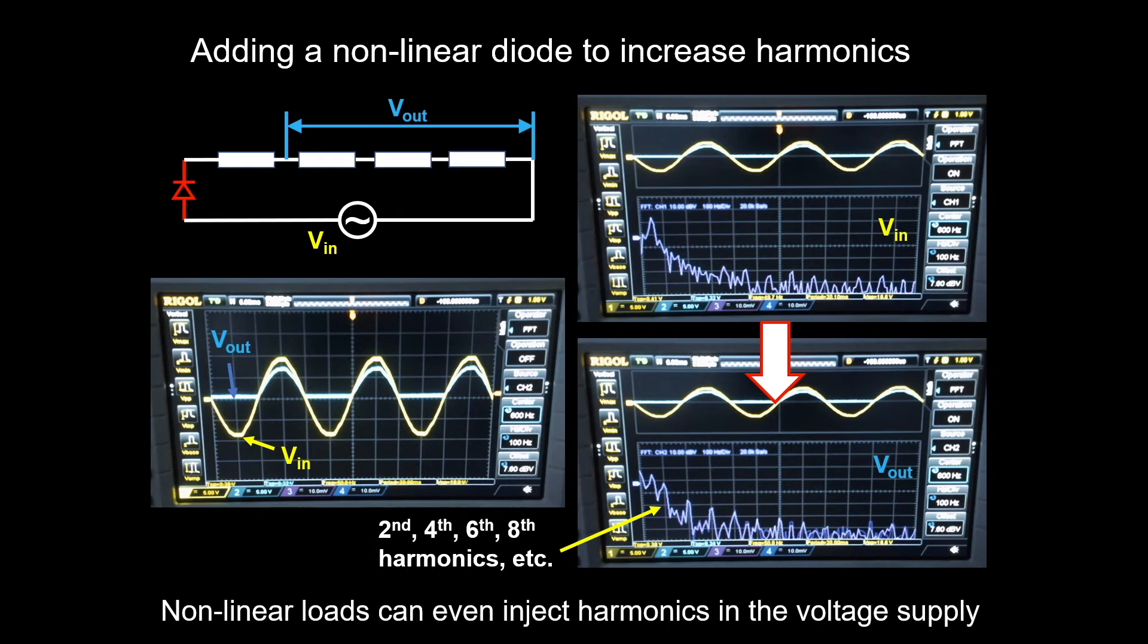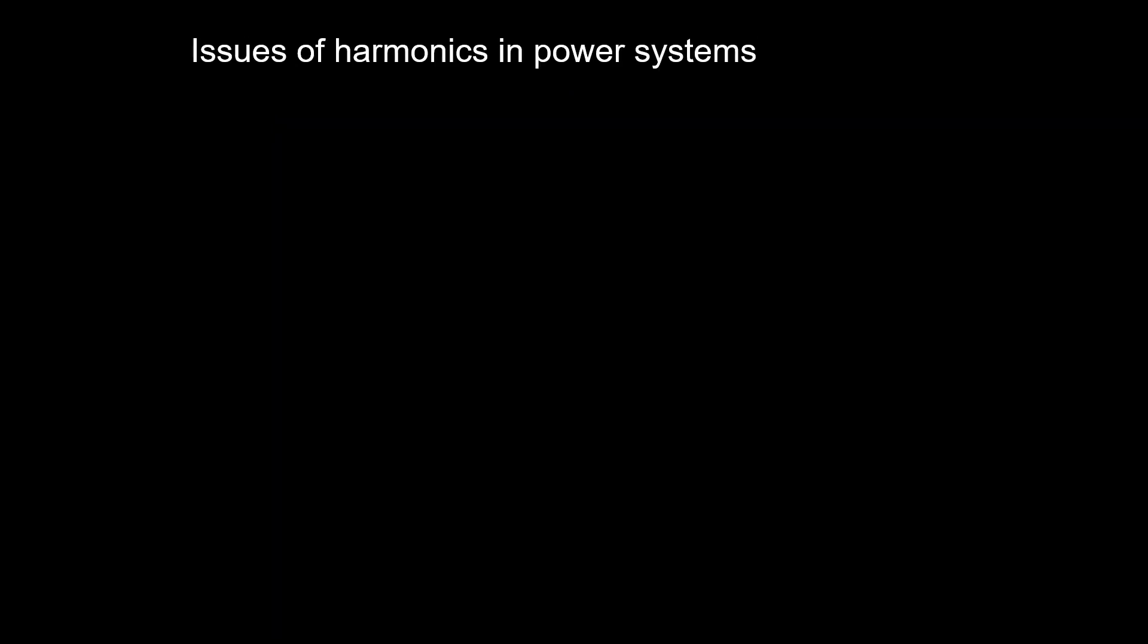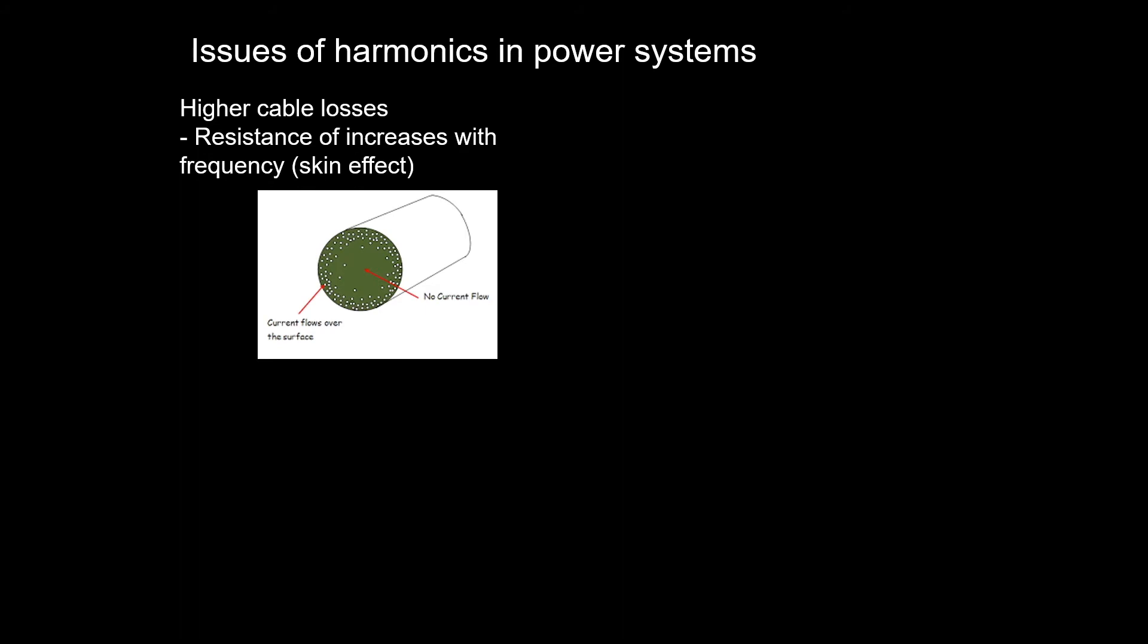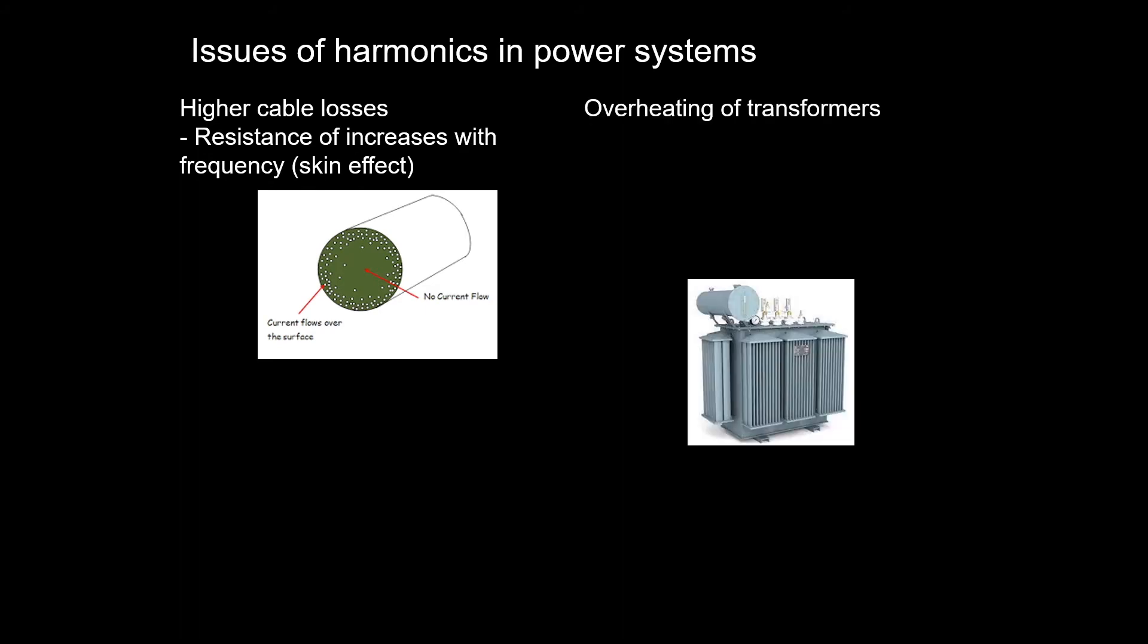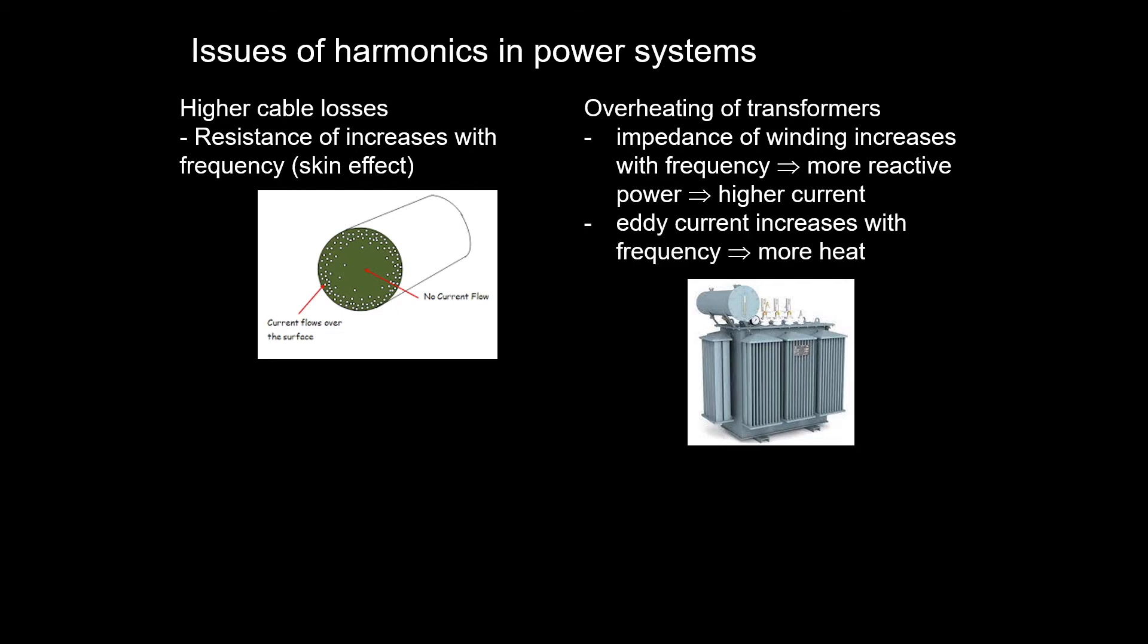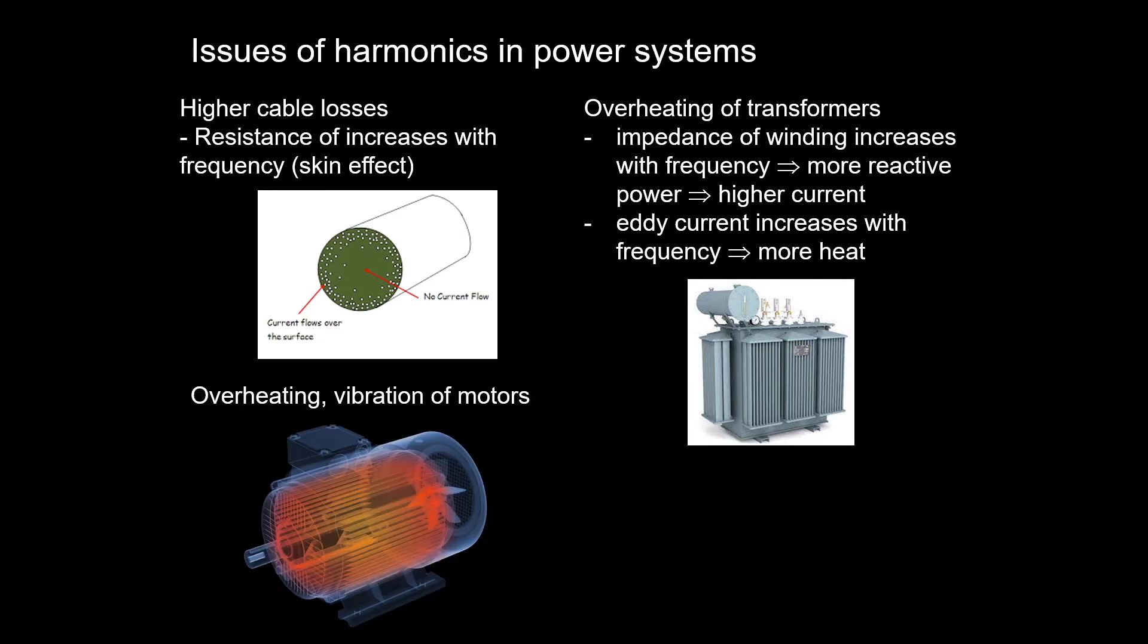Sometimes the non-linear load can even cause harmonics in the power supply. So you may wonder, what are the problems of harmonics in power systems? First, it will create higher cable loss as the resistance increases with frequency, known as skin effect. Second, it will cause overheating of transformers. The impedance of the winding increases, so there are more reactive power and higher current in the transformer. At the same time, eddy current also increases with frequencies. Third, harmonics can cause overheating and vibration of motors.